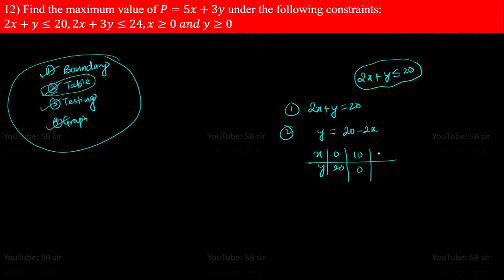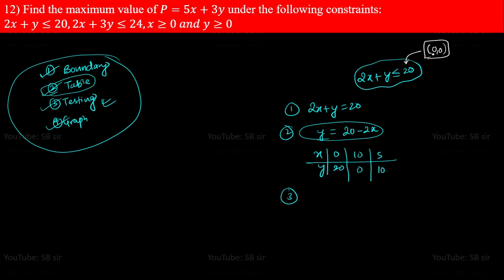These are the set of points through which the boundary line passes. Third, do the testing to check which half plane the inequality contains. If there is a constant on the right-hand side, I suggest taking the testing point at (0, 0). If there is no constant — for example, 2x + y ≤ 0 — use the testing point (1, 0) instead. If there is a constant, choose (0, 0); if there is zero on the right, choose (1, 0).